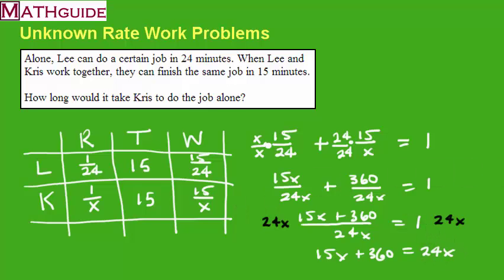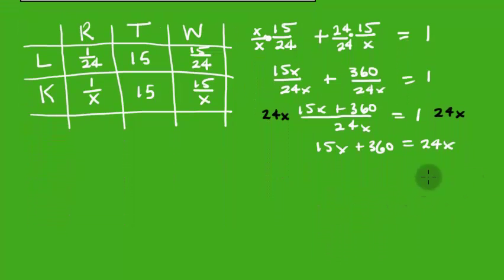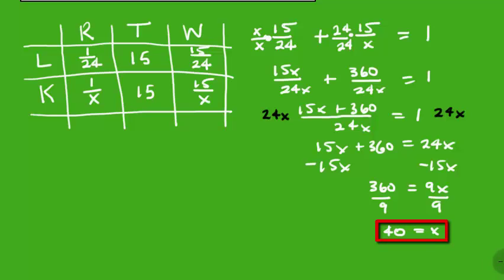So I'm going to need some more room, so I'm going to scroll down a bit. In order to solve this equation, I'm going to subtract 15x from both sides, and I'm going to get 360 equals 9x. And I'm going to divide by 9, and I'm going to get 40. So x is 40.